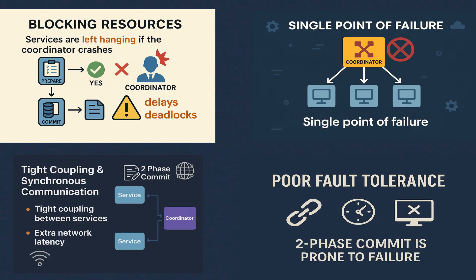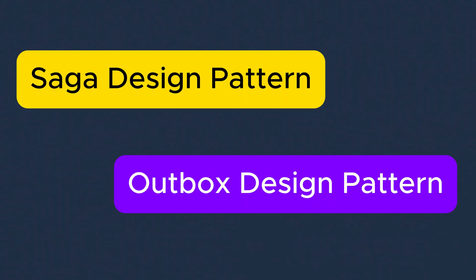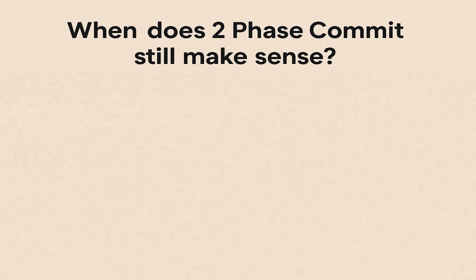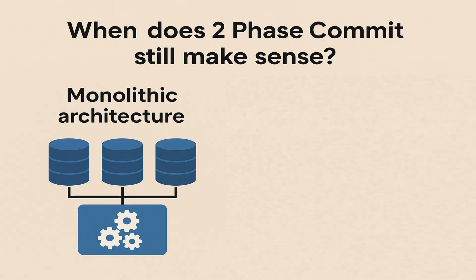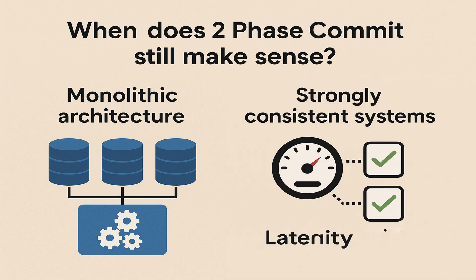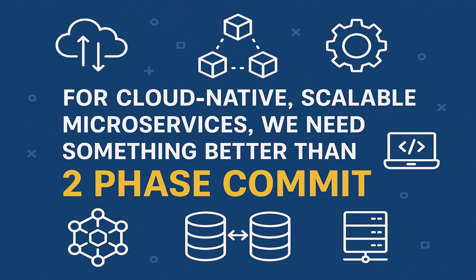These are the main reasons why two-phase commit is rarely used in microservices today. But it's important to know this pattern because many relational databases still support it, and it is the foundation for understanding better patterns like saga and outbox. Two-phase commit can still make sense in monolithic architectures with distributed databases, or in strongly consistent systems that don't prioritize latency. But for cloud-native, scalable microservices we need something better.